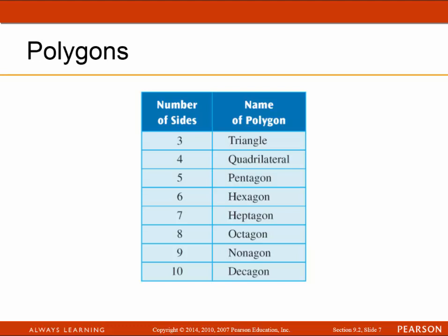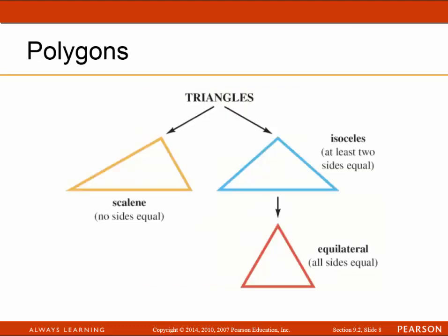Next, we're going to talk about triangles. There are three types in reference to their sides. Scalene, where none of the sides are equal to each other; isosceles, where at least two sides are equal; and from isosceles we can get equilateral, which means all the sides are equal in length.